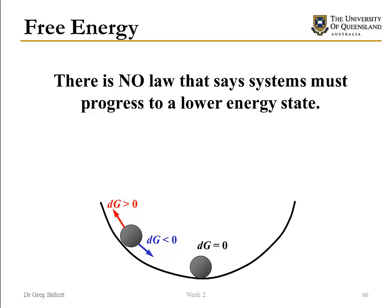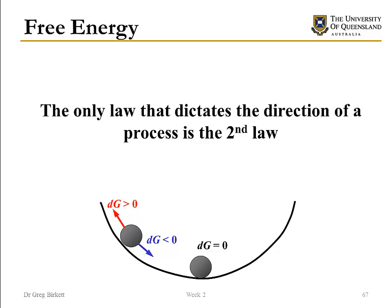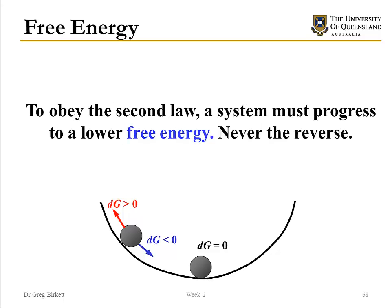There's no law that says systems must progress to a lower state of energy — that's a very common misconception. What systems must progress towards is a lower Gibbs free energy, which is dictated by the second law of thermodynamics. If the Gibbs free energy of a system decreases, that means the entropy of the universe increases, which we know must always be the case. If the entropy of the universe doesn't increase, then a process is impossible. To obey the second law, a system must progress to a lower free energy, never the reverse.